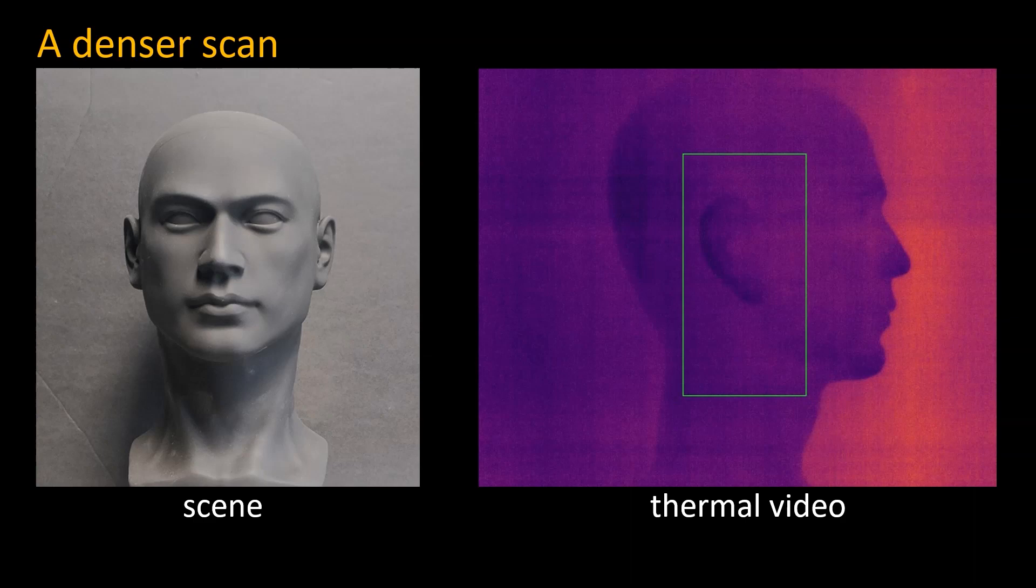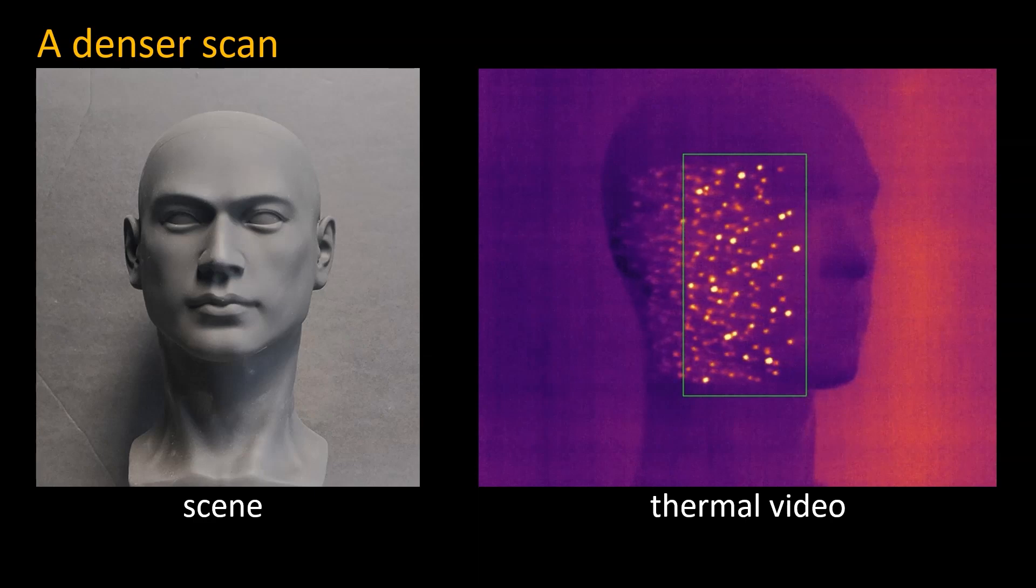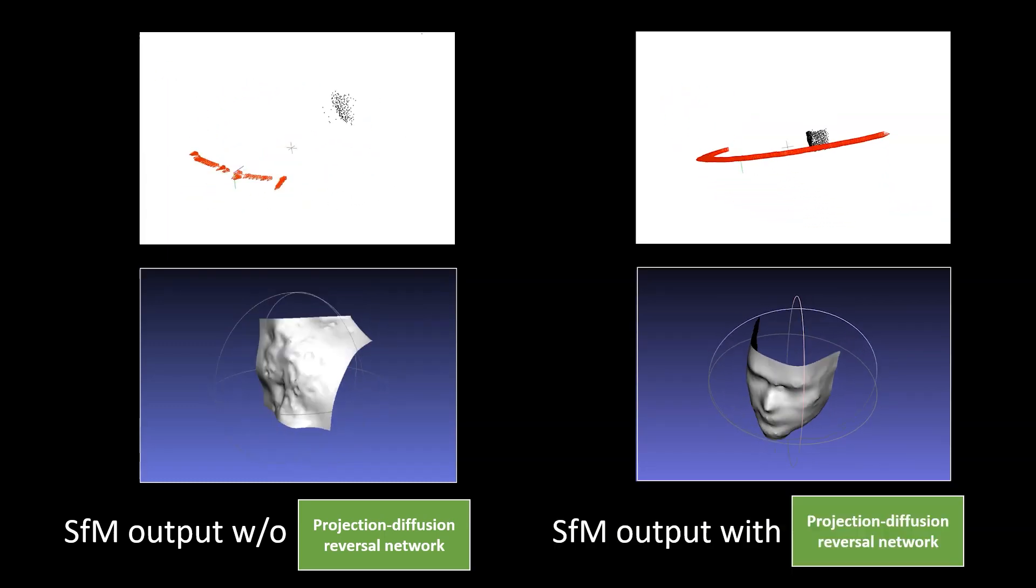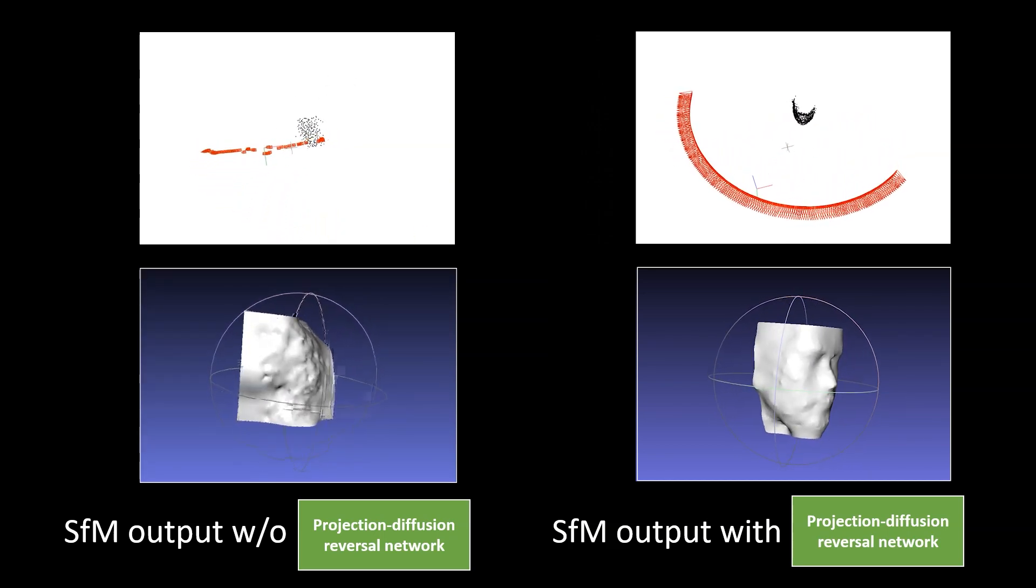Let's see the effect of our diffusion correction network by looking at another example. Notice that on this material the points evaporate and diffuse rapidly, which changes their appearance between the frames. Tracking the points without correcting for heat diffusion and the newly added inconsistent points results in a poor reconstruction, while correcting the frames using our network significantly improves the structure from motion quality.